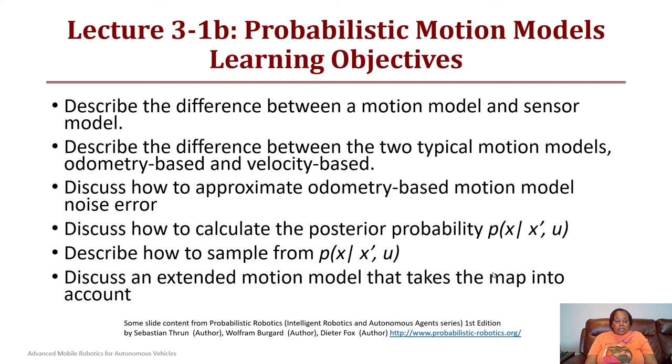We'll discuss how to approximate odometry-based motion model errors and also find velocity-based motion model errors. We'll discuss how to calculate the posterior probability p of x given x prime and u, and how to sample from the probability x given x prime and u. We'll also discuss our extended motion model that takes into account the map or environment.